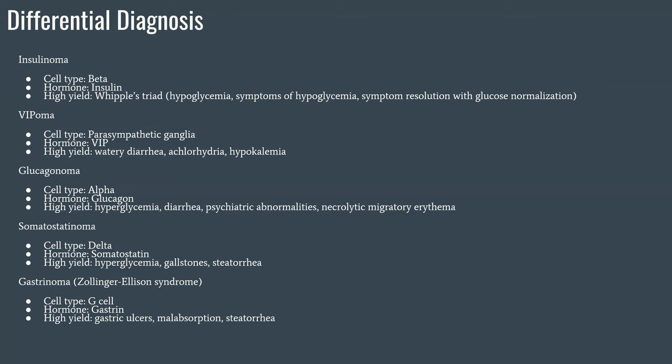This triad makes sense. Watery diarrhea occurs because VIP's primary function is to increase permeability and cause increased fluid response into the GI system. Hypokalemia comes from the profuse diarrhea. Achlorhydria is due to VIP-suppressed gastric acid production. That's the triad to know with VIPoma. Neither of these have looked like the problem we had in the last question.